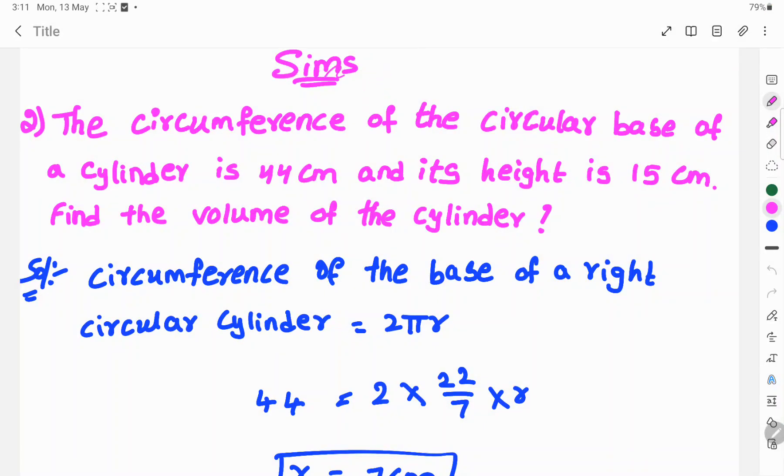Hi, welcome to Sims. Today's problem: The circumference of the circular base of a cylinder is 44 cm and its height is 15 cm. Find the volume of the cylinder.